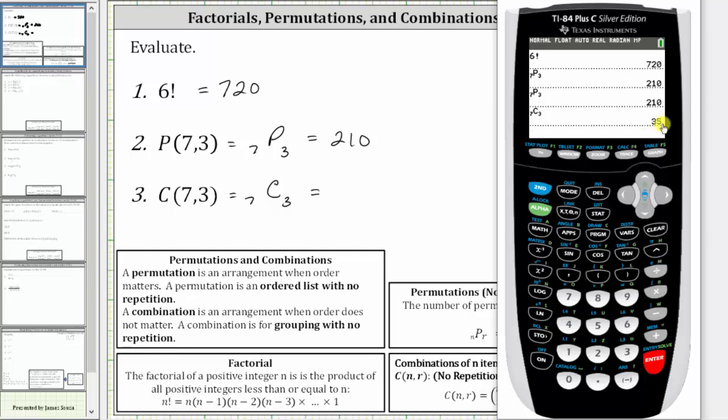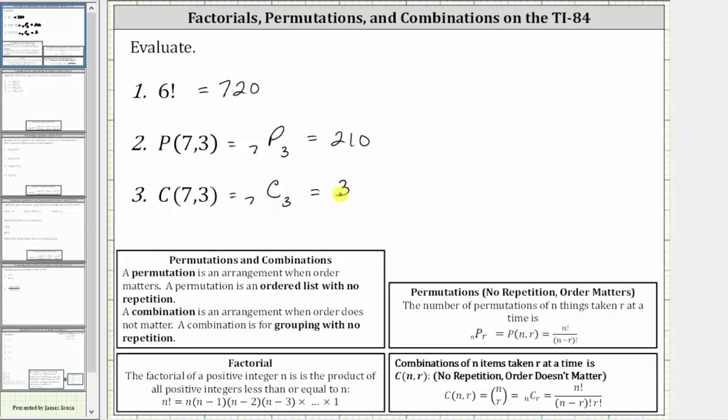Or again, on the newer version, we can also press math, right arrow to probability, select option three for combination, and then enter seven, right arrow, three, enter, and get the same result. I hope you found this helpful.